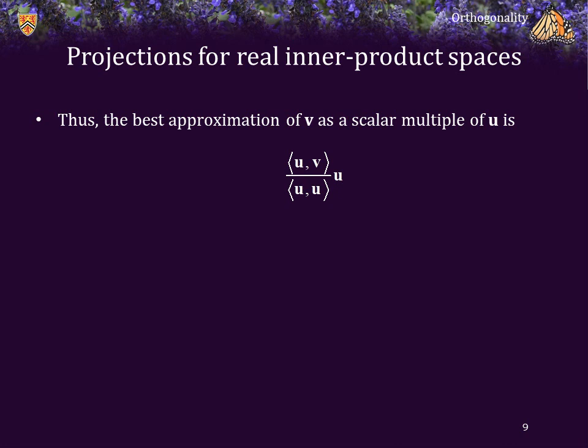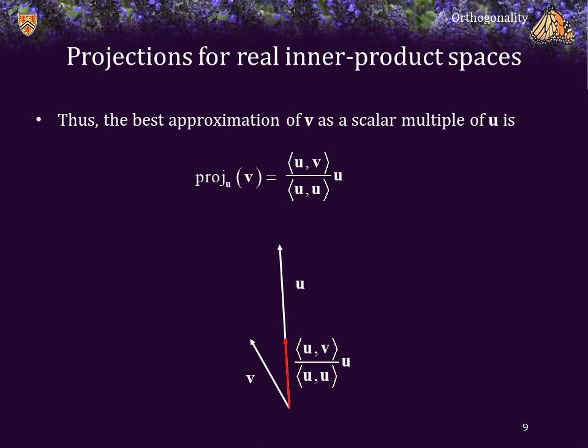The best approximation of v as a scalar multiple of u is given by (⟨u, v⟩ / ⟨u, u⟩) times the vector u. We denote this as the projection of v onto u. With u fixed, we can use different v's and find different projections onto u. The projection is so named because we are essentially projecting v perpendicularly onto the line spanned by u.